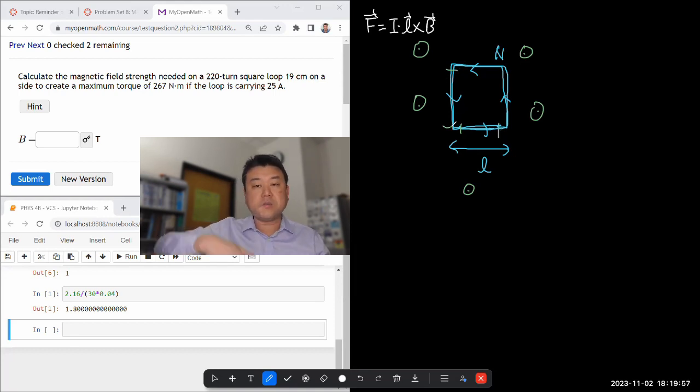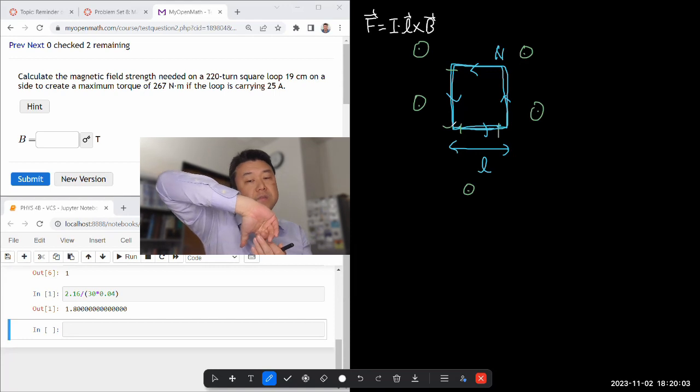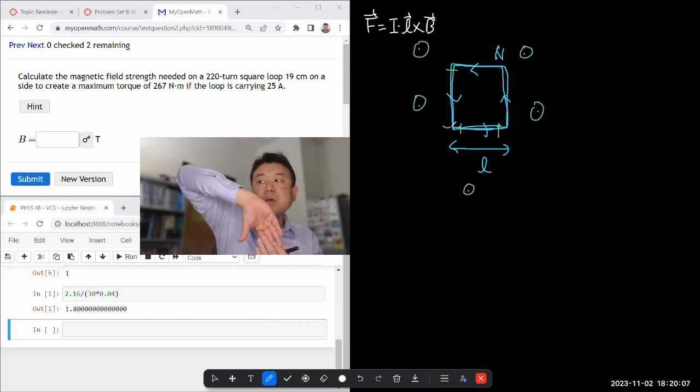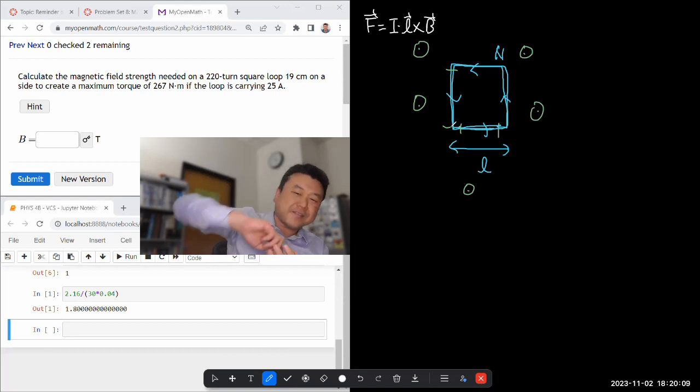So if a current is flowing counterclockwise, for the left segment, my L is downward. And I orient it until I can curl my fingers in the direction of magnetic field out of the screen. Then my thumb is pointed to the left.